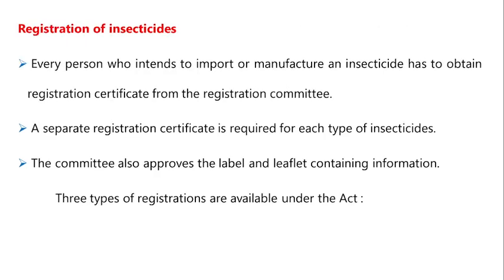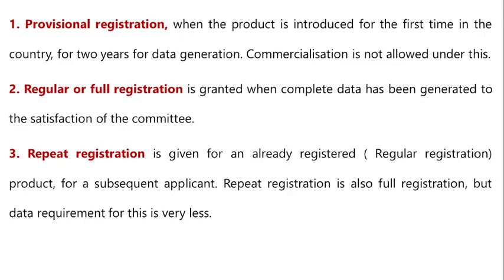Every person who intends to import or manufacture an insecticide has to obtain a registration certificate from the Registration Committee. A separate registration certificate is required for each type of insecticide. The committee also approves the label and leaflet containing information. Three types of registrations are available under the Act. The first is provisional registration, where the product is introduced for the first time in the country for two years for data generation; commercialization is not allowed under this registration.